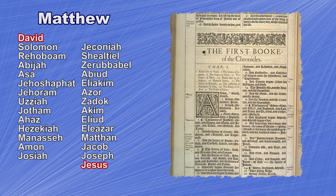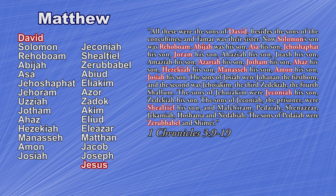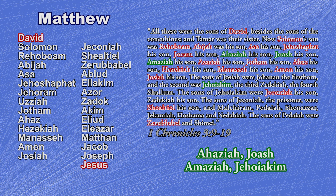Note that the spelling of some of these names may differ between Bible translations, depending on which original manuscripts were used. When we compare 1 Chronicles with Matthew, we find that Matthew has omitted at least four names from the list: Ahaziah, Joash, Amaziah, and Jehoiakim.